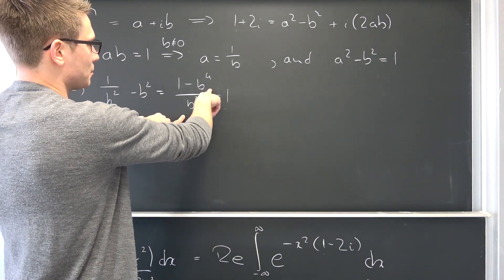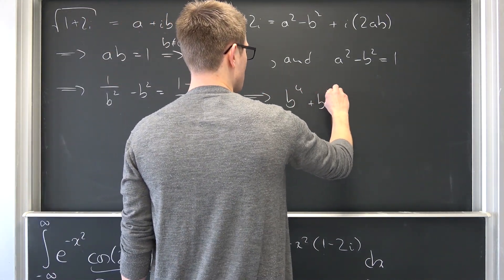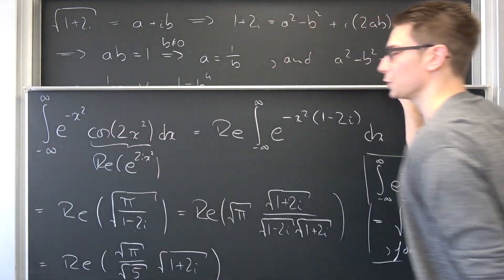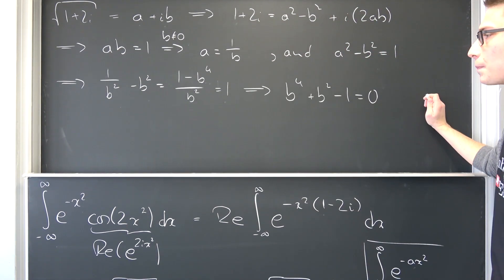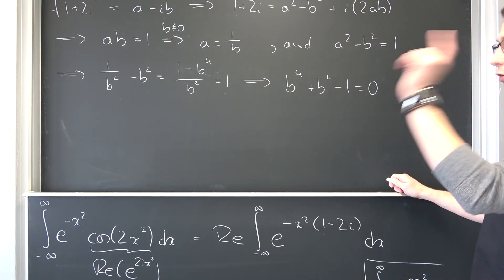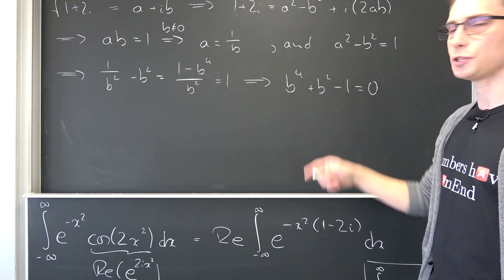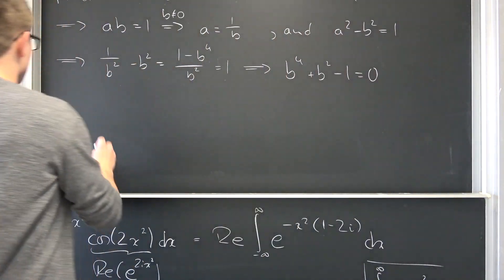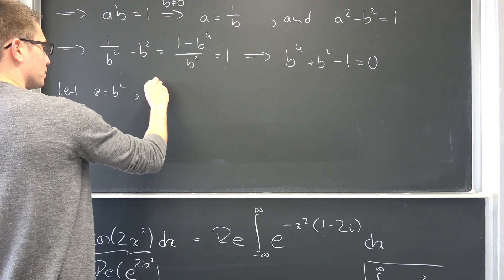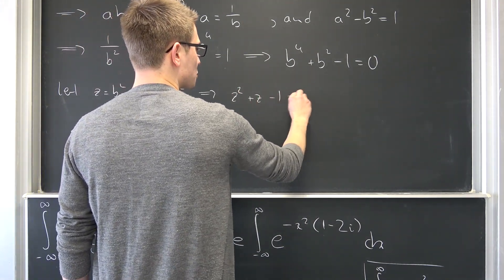The imaginary part on the left is 2, and on the right is 2ab, so ab must equal 1. This means a equals 1 over b. Also, the real parts give us a squared minus b squared equals 1. Plugging a equals 1 over b in, we get 1 over b squared minus b squared equals 1, which gives 1 minus b to the fourth power over b squared equals 1. We can multiply both sides by b squared, add b to the fourth power on both sides, and subtract 1, giving us b to the fourth plus b squared minus 1 equals 0.